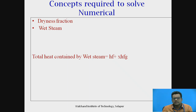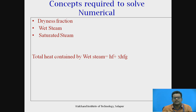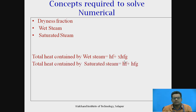For wet steam, the total heat per unit mass is given by: H = HF + X·HFG, where HF is the sensible heat content of the liquid, HFG is the latent heat at the given pressure, and X is the dryness fraction, which is between 0 and 1. For saturated steam, the same formula applies but X = 1, so the total heat becomes HF + HFG.